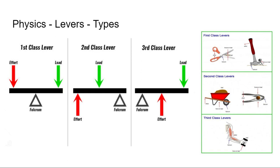The third class lever doesn't give you mechanical advantage — you're actually losing force, because your effort is closer to the fulcrum and your load is further away. Whenever your effort is closer to the point of rotation compared to what you're trying to lift, that becomes harder to do. You can test this: pick up anything heavy around you — even a water bottle. Stick your hand out and lift it; it's a lot harder. Then pull your hand all the way in and try lifting — that's a lot easier.